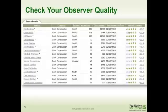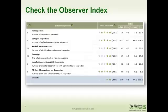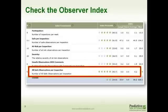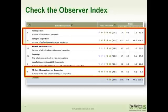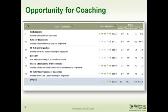You can also look at observer quality through the observer index. If you pull up the observer summary report, you can look at index percentiles. If several people at your location are low, clicking on their index percentile lets you dig deeper. In this case, the number of all-safe observations per inspection is incredibly high, as well as the number of safe things. On a positive note, they are participating a lot, but we need to get them to look at riskier things. It's really an opportunity for coaching.